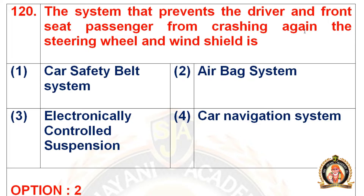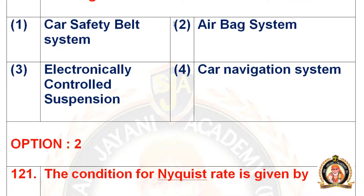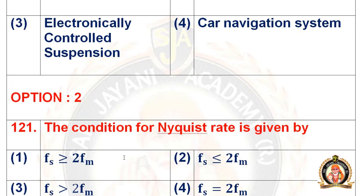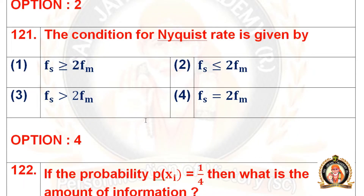Question 120: The device that prevents the driver and front seat passenger from crashing into the steering wheel and windshield. Options are car safety belt system, airbag system, electronically controlled suspension, and car navigation system. The right option is the second one, that is the airbag system. For detailed solution, visit our YouTube channel.